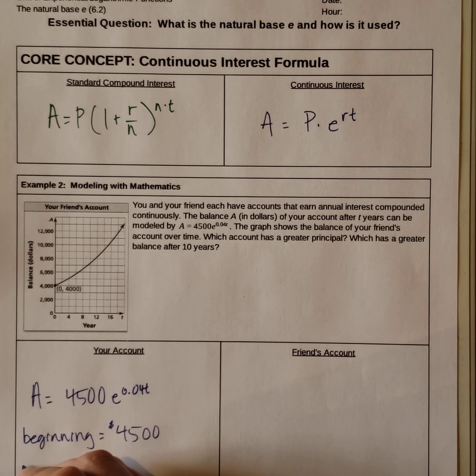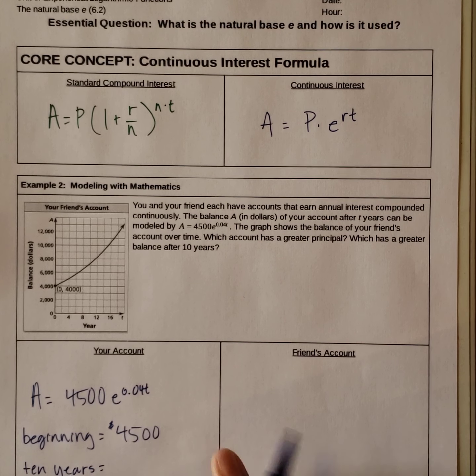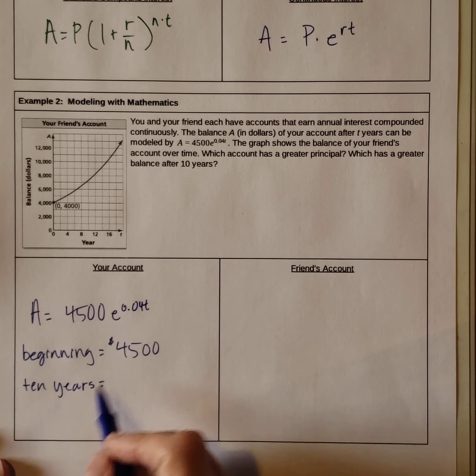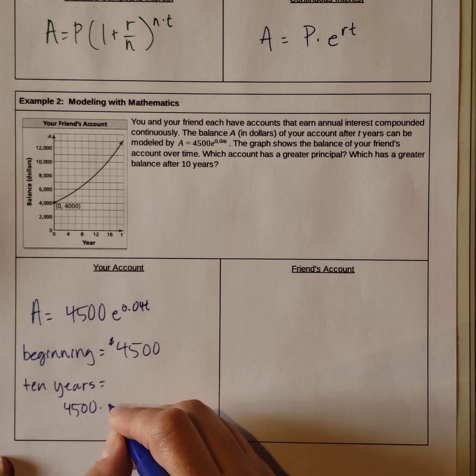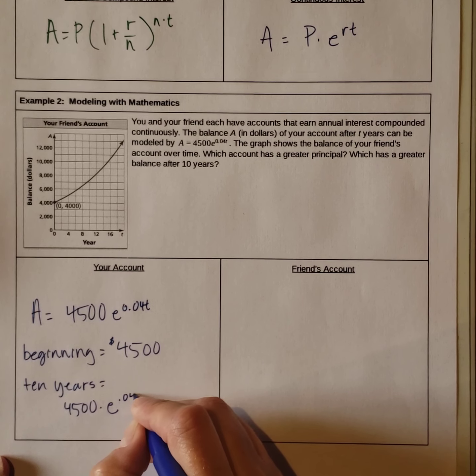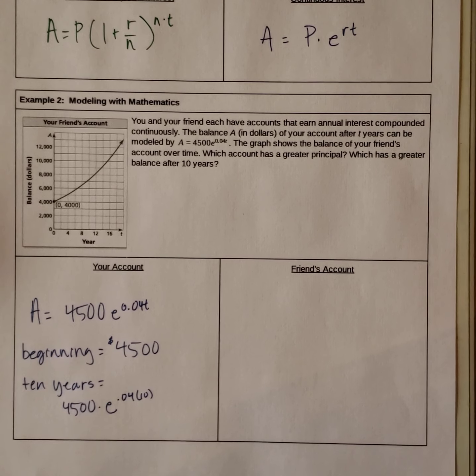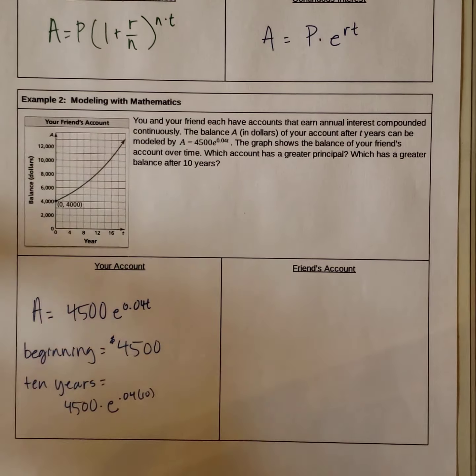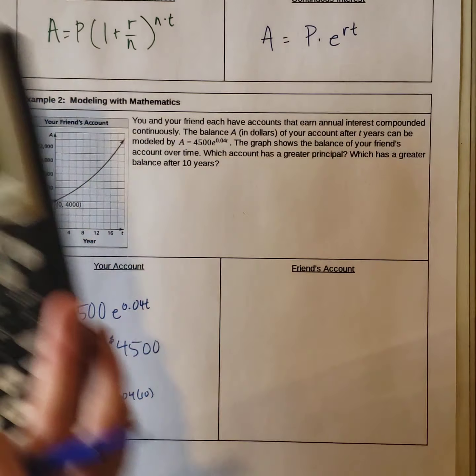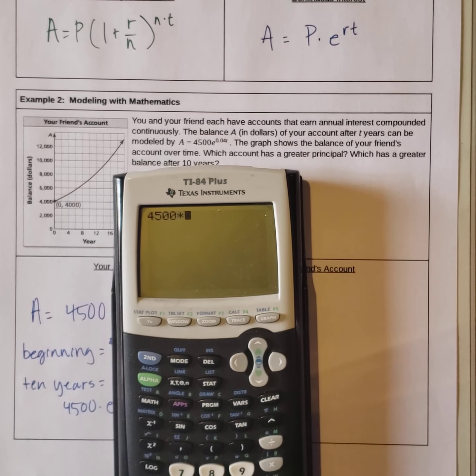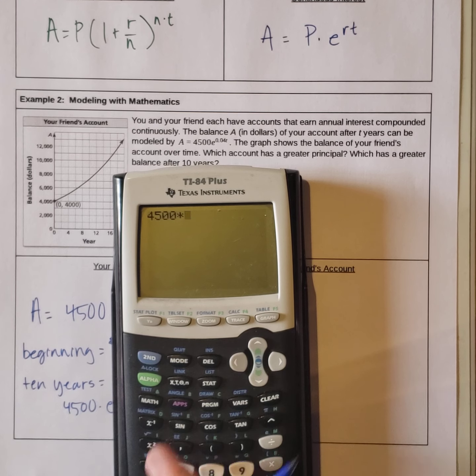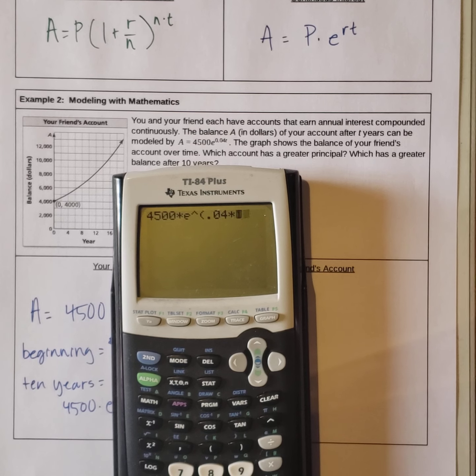After 10 years, we substitute 10 in for the t. So we have 4,500 times e raised to the 0.04 times 10. And when we put that in our calculator, 4,500 times our e is right here. So we hit our second e, and it's raised to the 0.04 times 10.